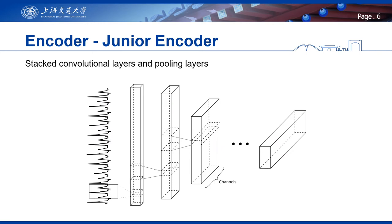For the desynchronized scenario, we use stacked convolutional layers and pooling layers to extract shift-invariant features to address the desynchronization. But we avoid fully connected layers and very deep convolutional structures by leveraging upper components like the senior encoder and attention.